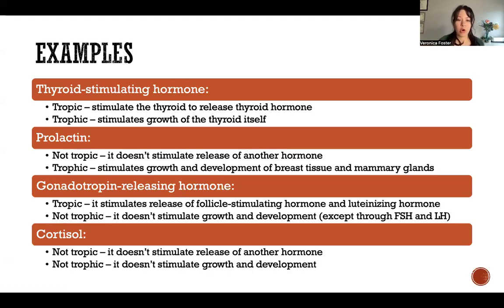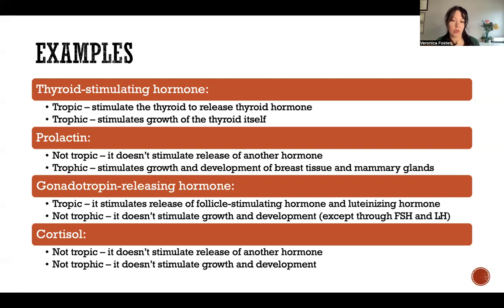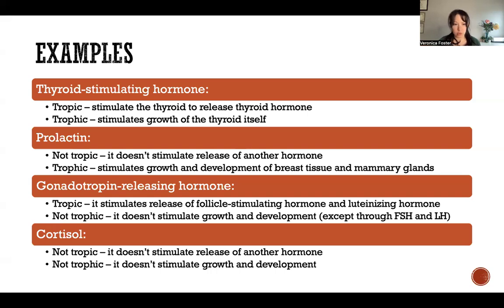Thyroid stimulating hormone is both tropic and trophic. It's tropic because it stimulates the thyroid gland to release thyroid hormone, but it's also trophic because it stimulates growth of the thyroid itself. Most of the tropic hormones in the body are also trophic, which is why you commonly will see most tropic hormones also referred to as trophic. Most tropic hormones are both, but that's not always the case.